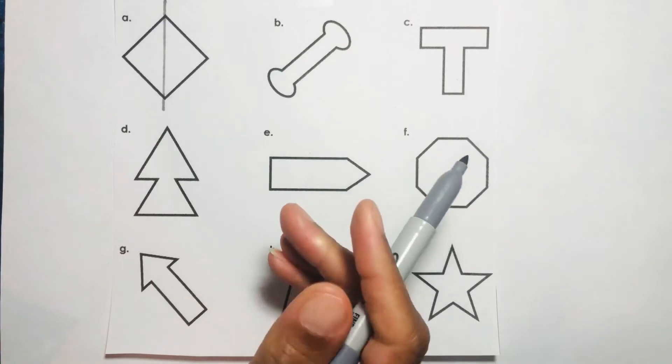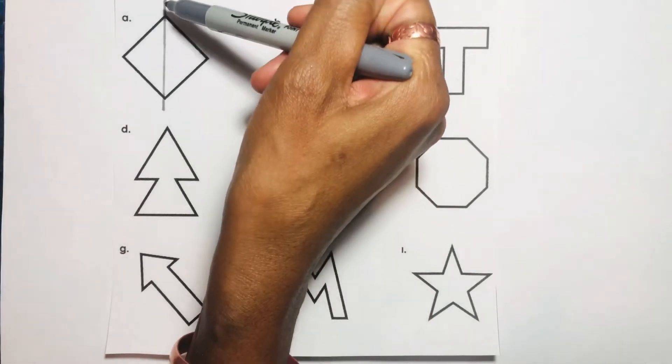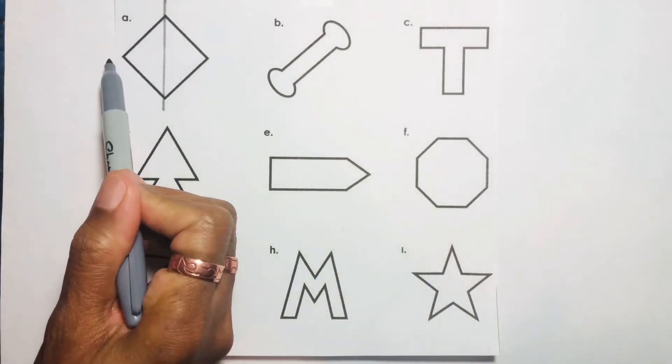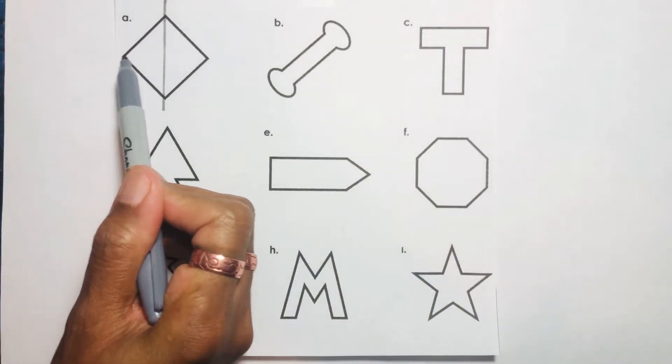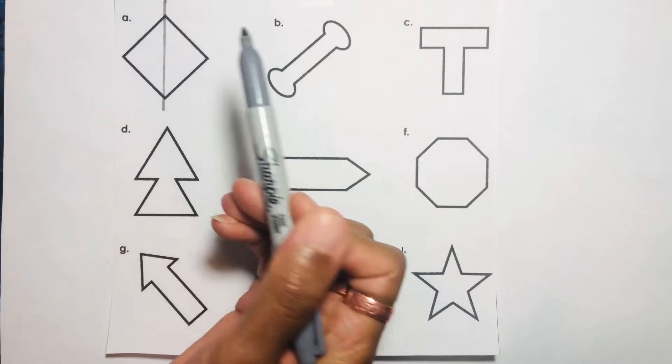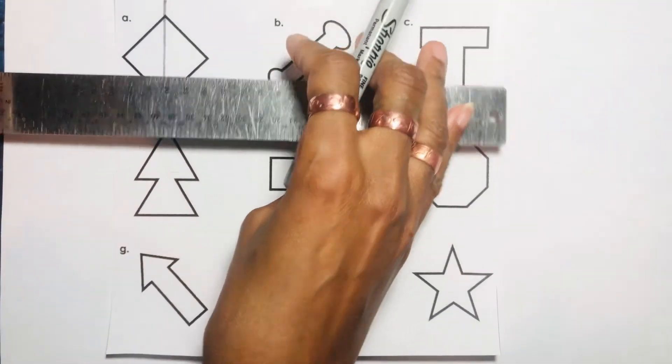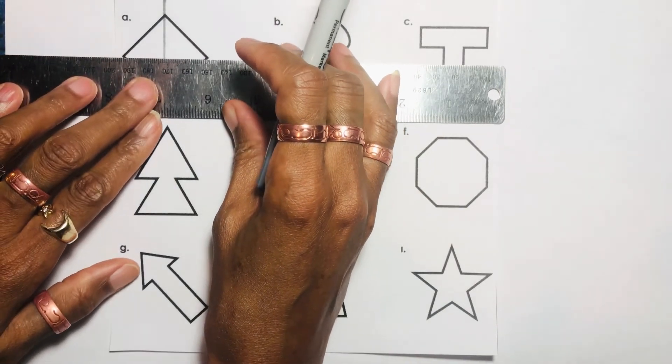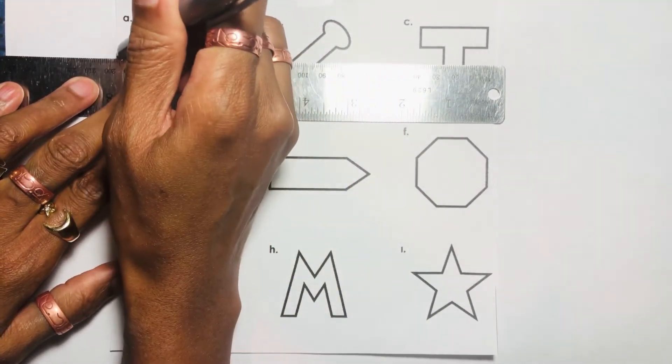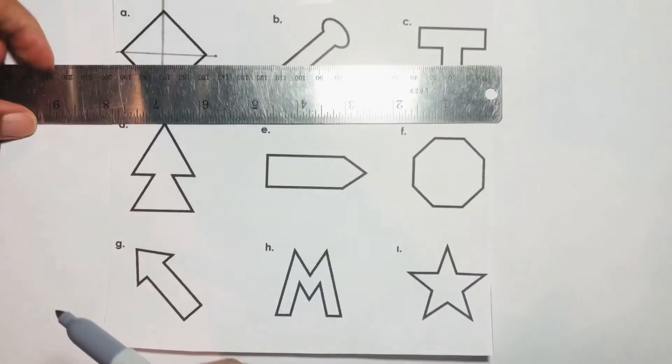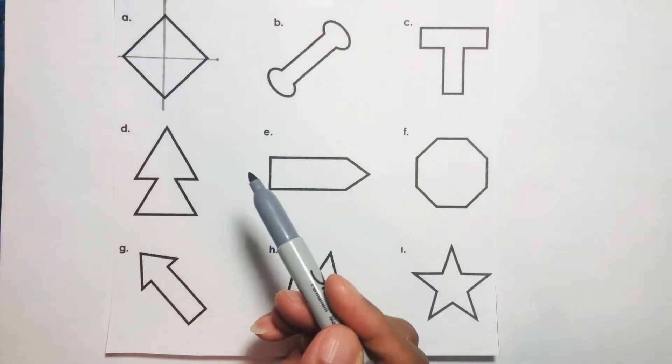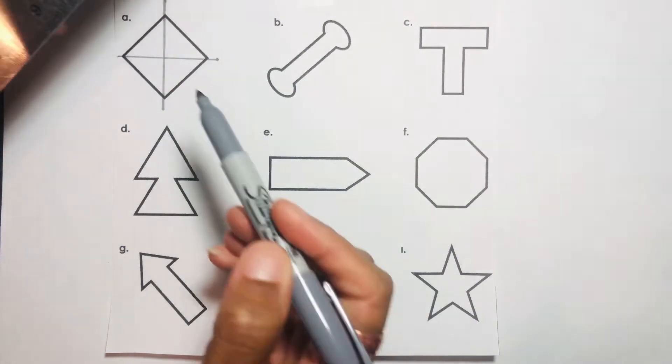Now if I look at this shape again, I can draw a vertical line from north to south. I can also draw a horizontal line from west to east, and that would also give me two halves. So let's do that now. If I was to do this, then you can see that that is also symmetrical if I do a horizontal line.